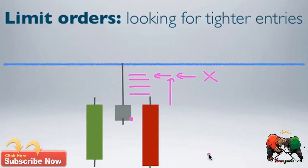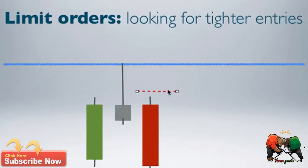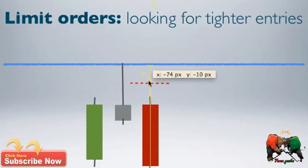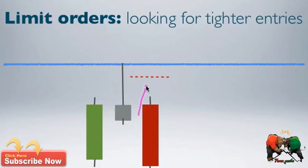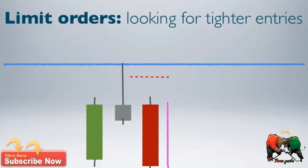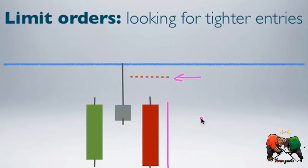A pending order is only executed if price touches that particular price level. For example, if price closes and you place your limit order at a certain level, but in the following candle price never retraces up to that level, your broker never executes that order. Price simply goes all the way down in your desired direction, but since the order never got executed it remains pending — you are never actually short in this market and you miss the opportunity altogether.